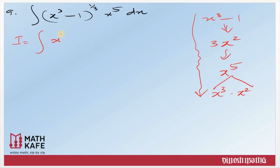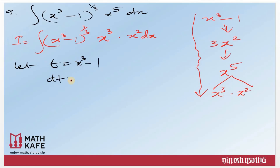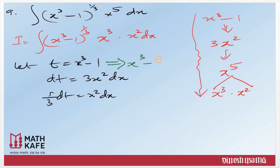Now let us write the integral: I = ∫(x³−1)^(1/3) · x³ · x² dx. Let t = x³−1, so dt = 3x² dx, meaning (1/3)dt = x² dx. Also, x³ = t + 1. So I = ∫t^(1/3) · (t+1) · (1/3) dt = (1/3)∫[t^(4/3) + t^(1/3)] dt.